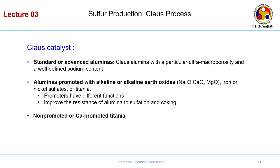The Claus catalyst can be divided into three categories. First, the standard alumina — the original catalyst. Second, Claus alumina with ultra-micro porosity, allowing reactants like SO2 and H2O to access the surface and form elemental sulphur. Third, alumina promoted with alkaline or alkaline earth oxides — sodium oxide, calcium oxide, magnesium oxide, iron, nickel sulphate, and titania — as modifiers.